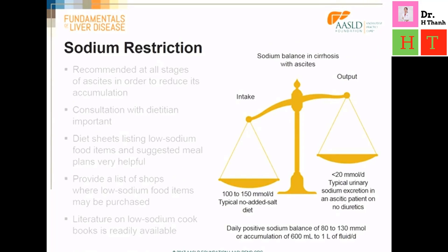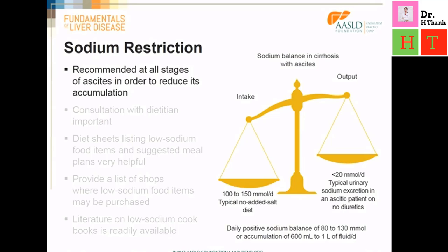Sodium restriction is recommended at all stages of ascites in order to reduce ascites accumulation. A typical North American no-added salt diet contains approximately 100 to 150 millimoles of sodium. A patient with cirrhosis and ascites who is not on a diuretic is usually unable to eliminate any sodium via the kidneys. Therefore, a patient consuming a typical no-added salt diet will have a daily positive sodium balance of 80 to 130 millimoles — equivalent to accumulation of 600 ml to 1 liter of fluid. Reducing oral sodium intake will reduce the amount of ascites accumulated.